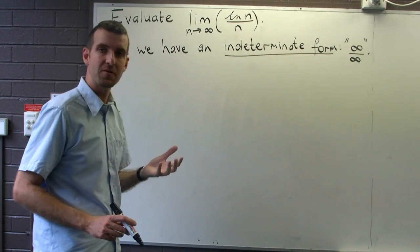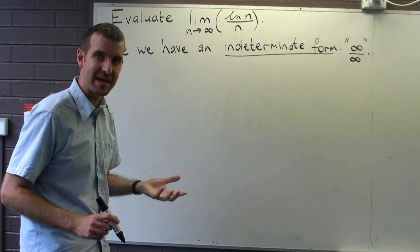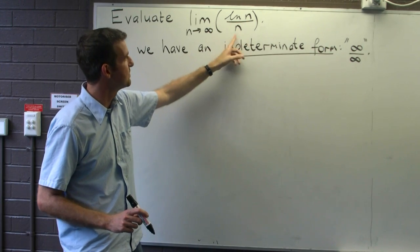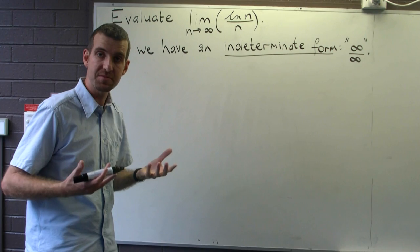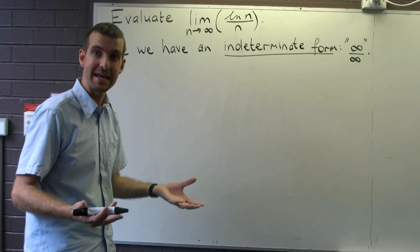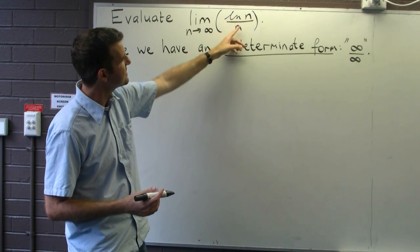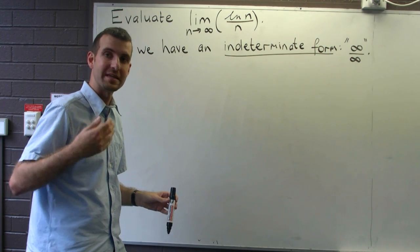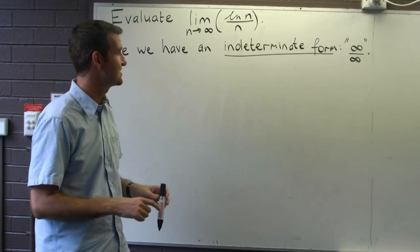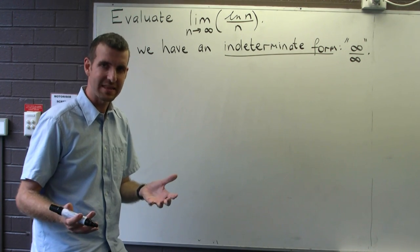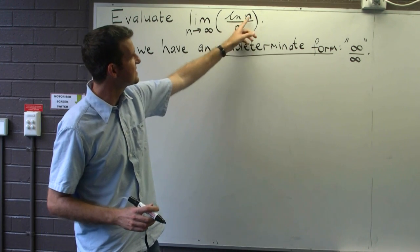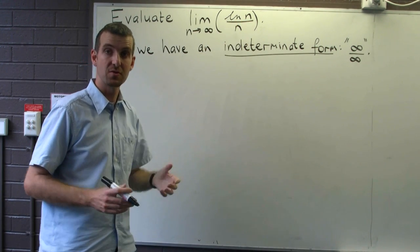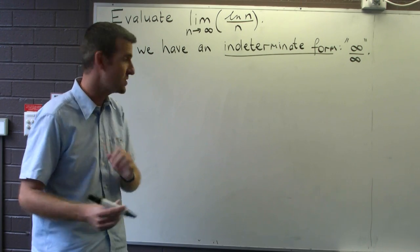L'Hôpital's rule involves differentiation: we differentiate the top part, we differentiate the bottom part, and then possibly retake the limit. But there's a problem — this is a sequence, and so it's only defined for natural numbers; we can't differentiate that. What we need to do is extend each part of this sequence to the real numbers.